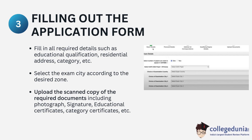The third step requires you to fill out all the necessary details in the application form, such as your educational qualification, residential address, and category. You will also be required to select your preferred exam city or exam zone. Finally, you will be required to upload a scanned copy of required documents including a photograph, signature, educational certificates, category certificates, and others.